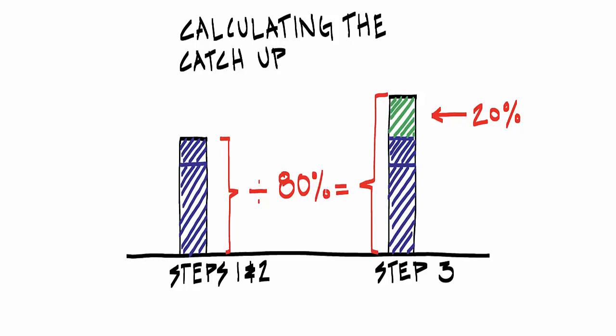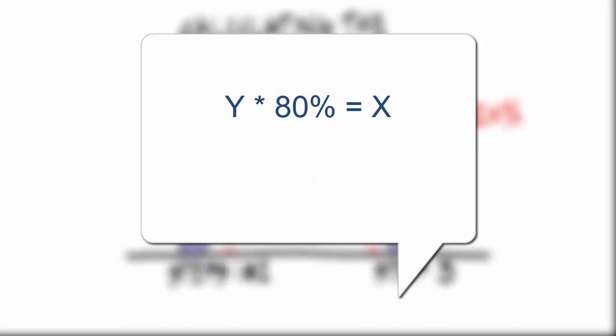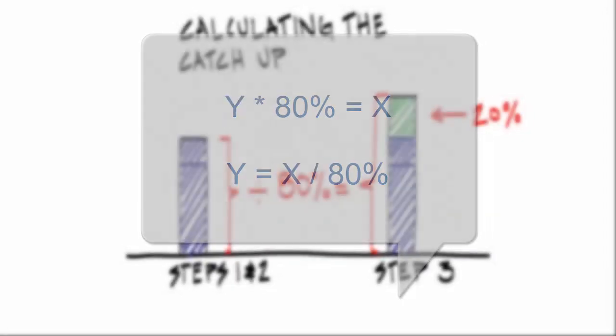Just to be clear, this is simple algebra. If the value y multiplied by 80% equals x, it follows that y is equal to x divided by 80%.